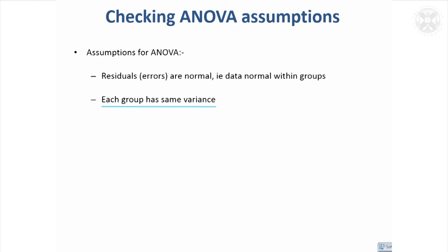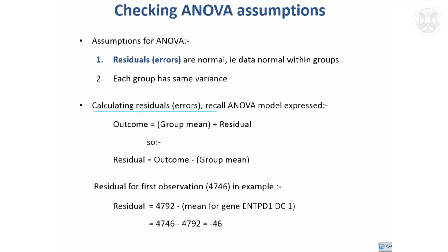This slide was just about calculating those residuals, reminding you what is meant by the residual—it's what's left over on top of the group mean for each observation. You can get it simply by taking the outcome minus the group mean to get the residuals. For example, our first observation was 4746, and if we take off its mean for that particular gene group, the 4092, we get a residual of minus 46. We do that for all the observations, and it's those error terms in the model, these residuals, that are assumed to be normally distributed.